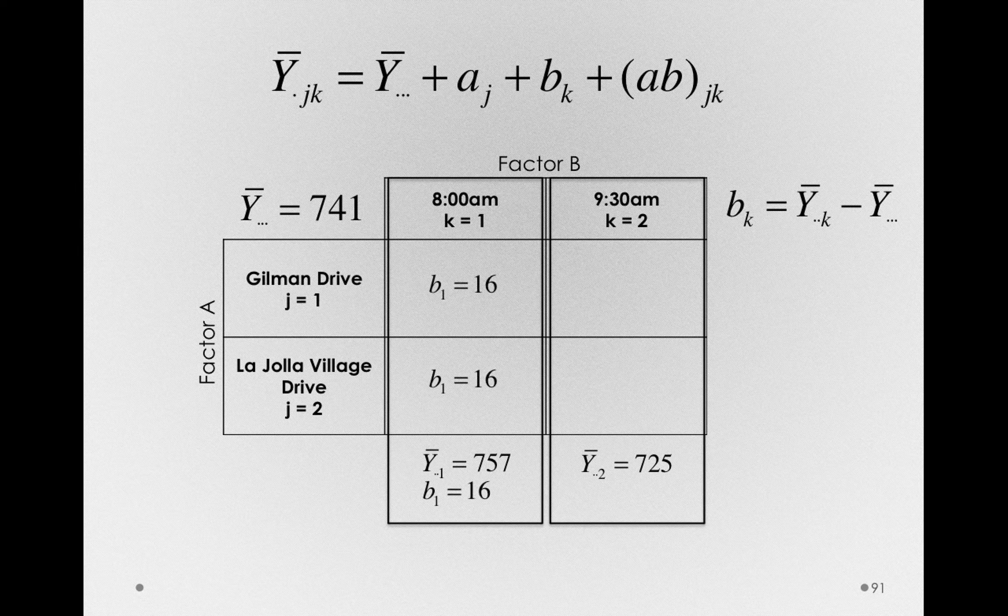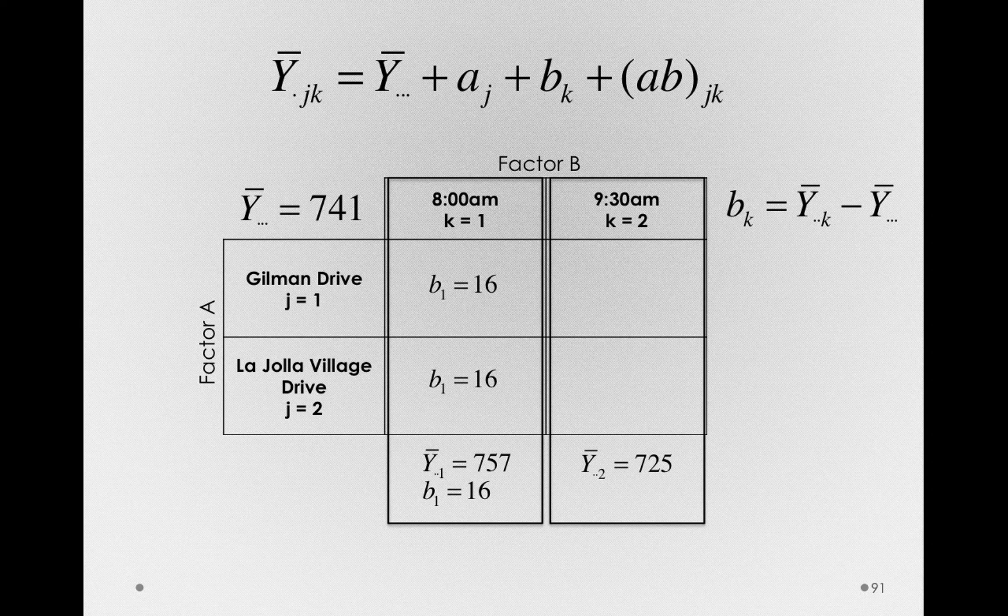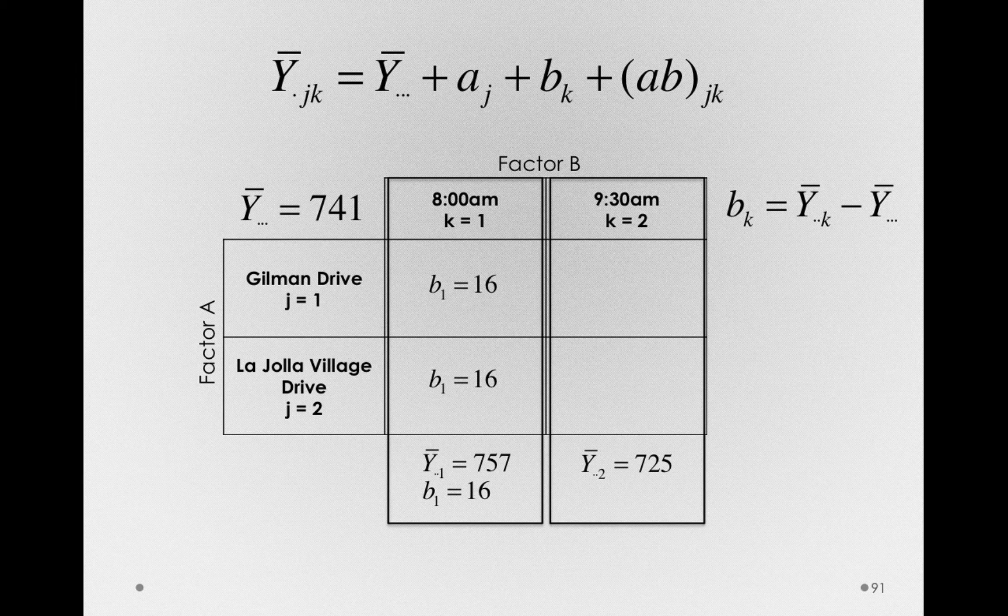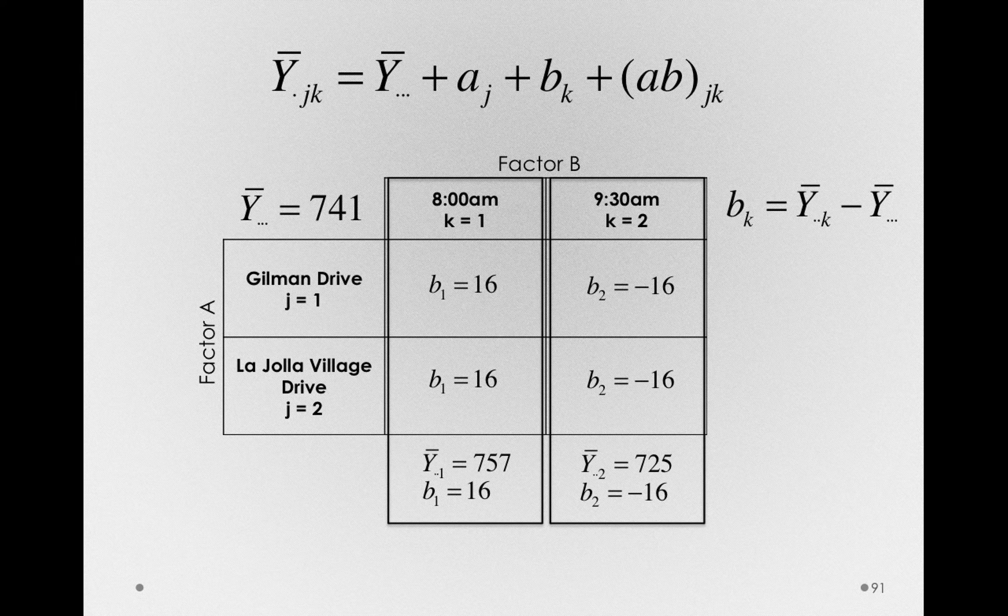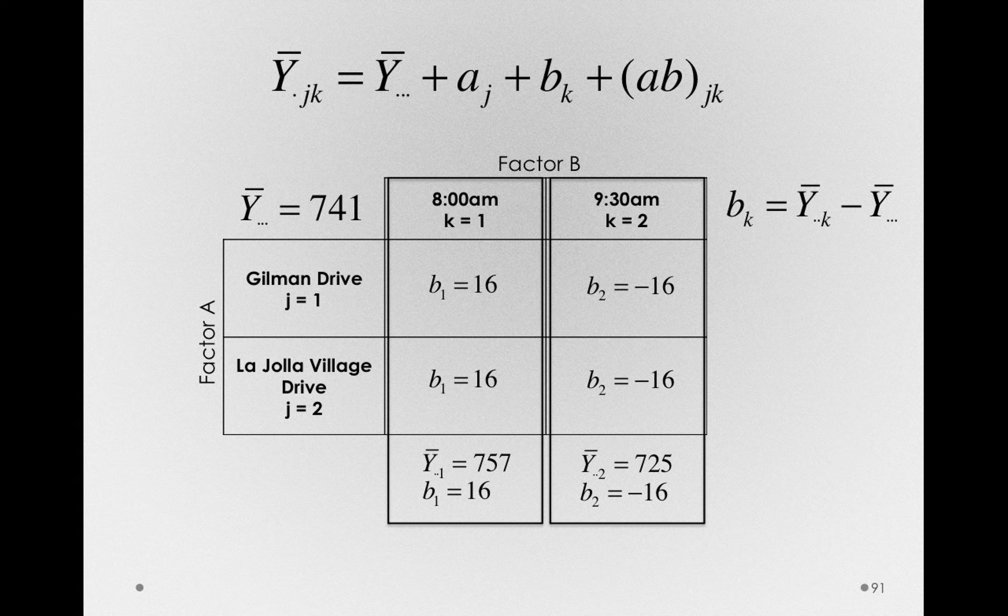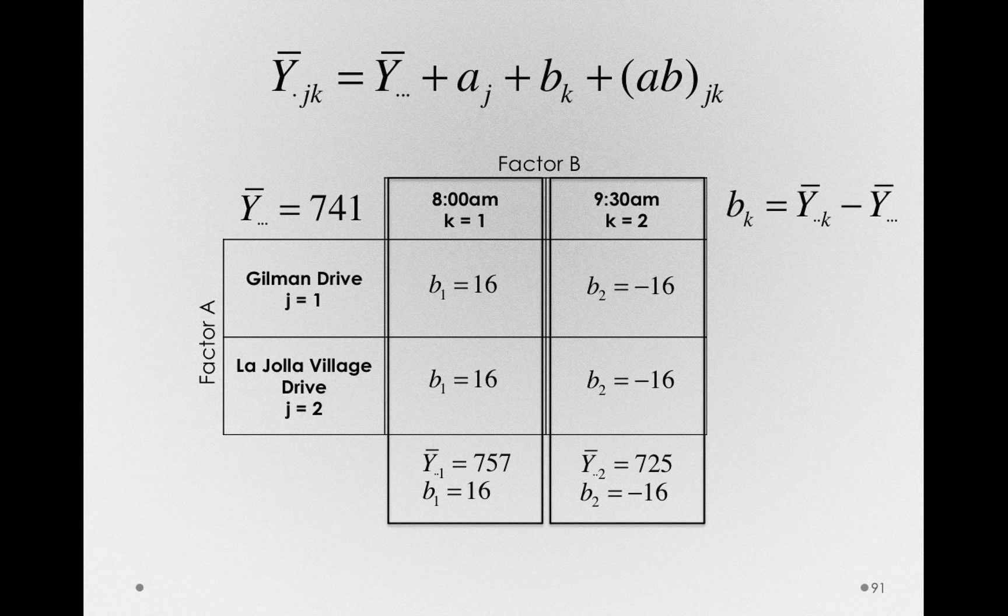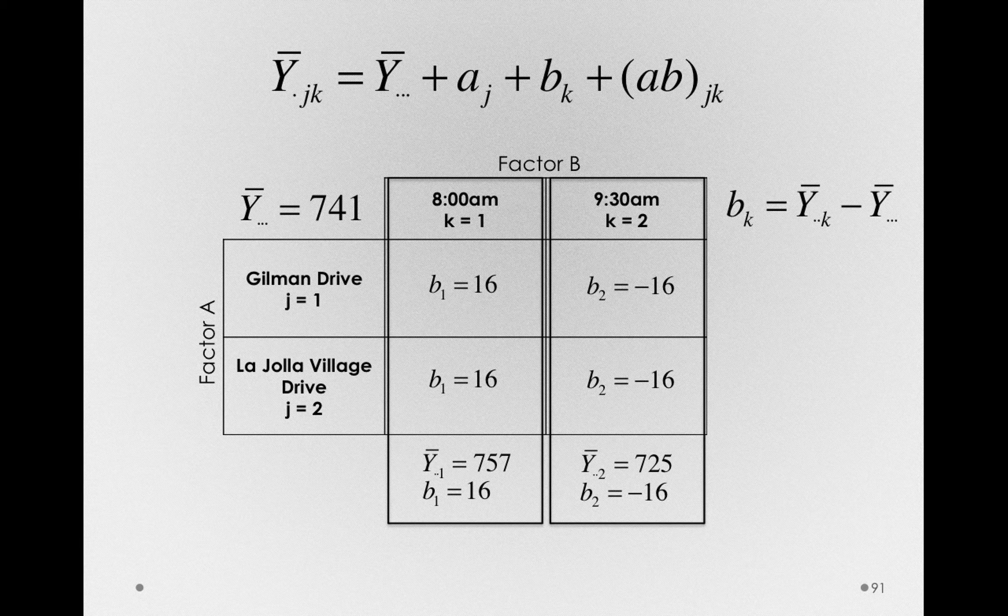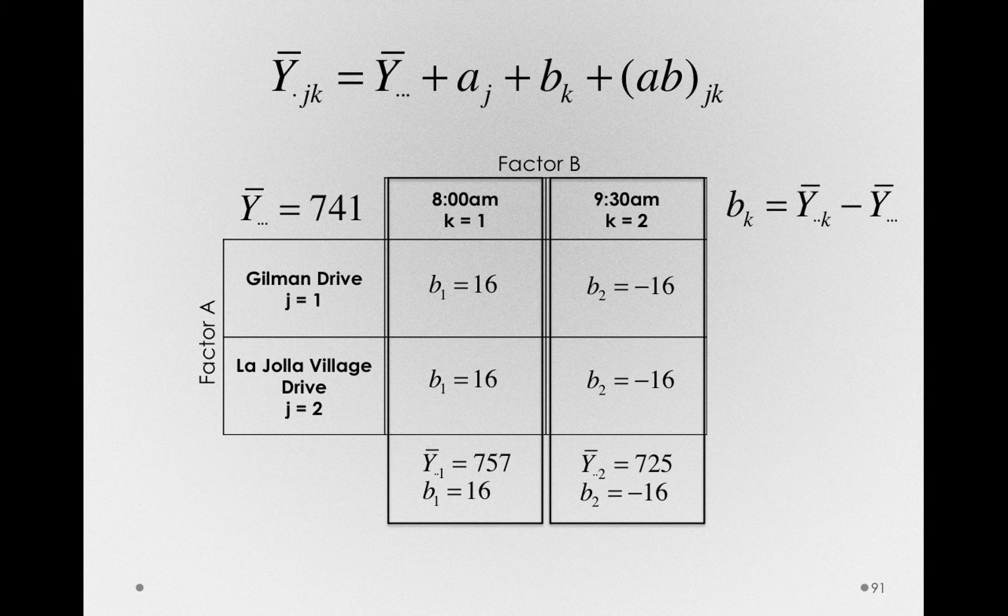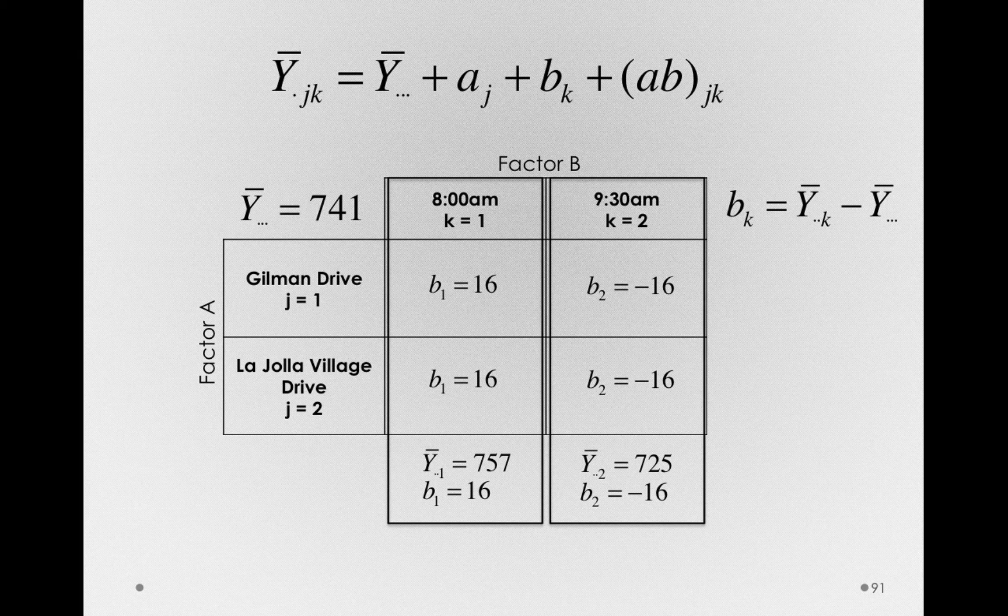So we can do the subtraction, and you'll see that B sub 1 is equal to 16. At 8 a.m., it is 16 seconds slower on average than the overall grand mean. And notice at 9:30, it is 16 seconds faster. That is, these values are yoked. To the degree that 8 a.m. is faster or slower, 9:30 has to be the opposite. This is enforced by the geometry of the factorial structure. Notice that the grand mean is formed as an average of these two means, so to the degree that one is higher, the other is lower.